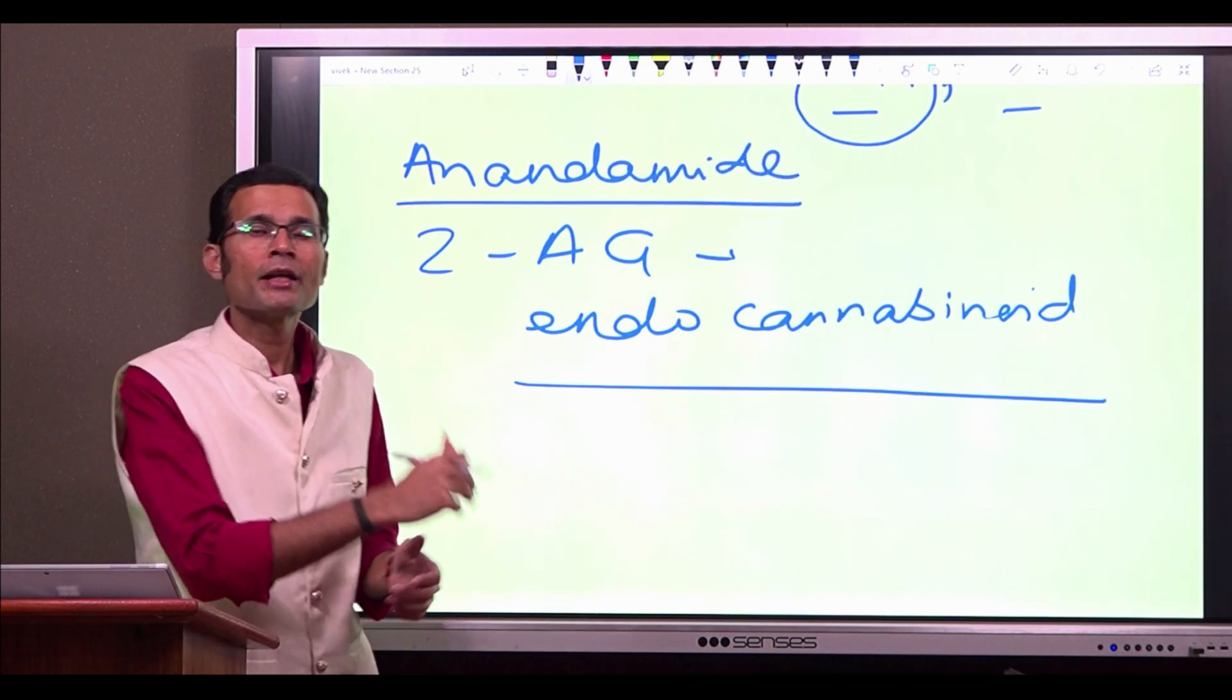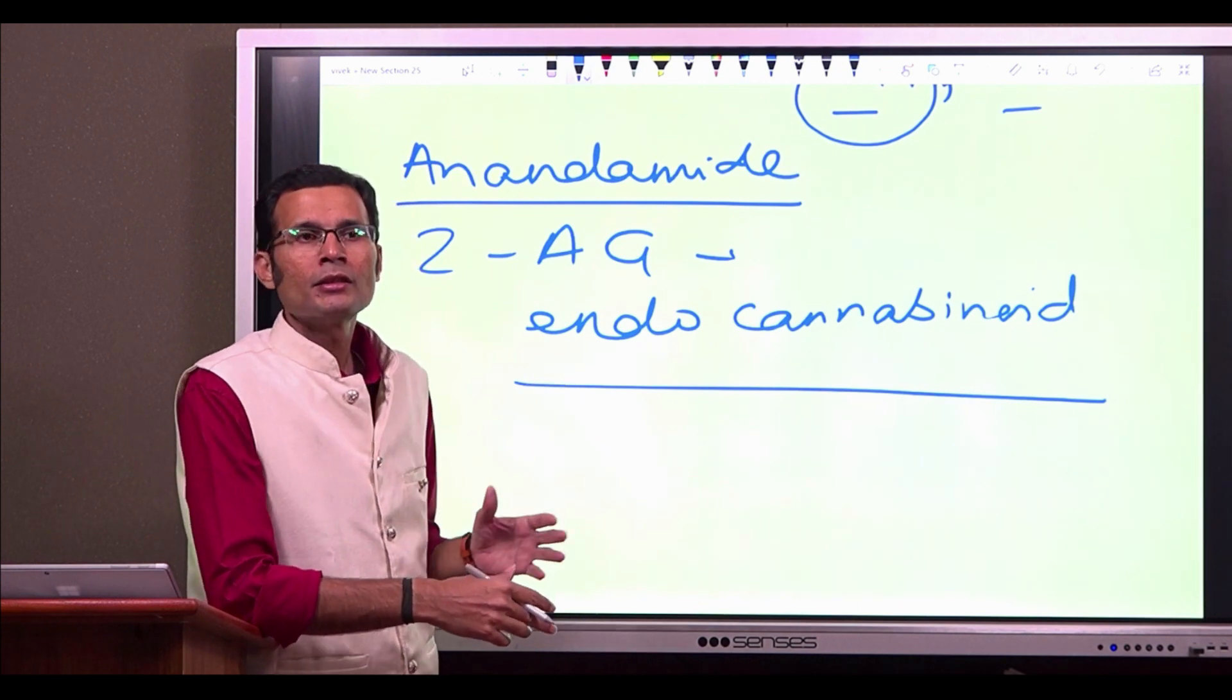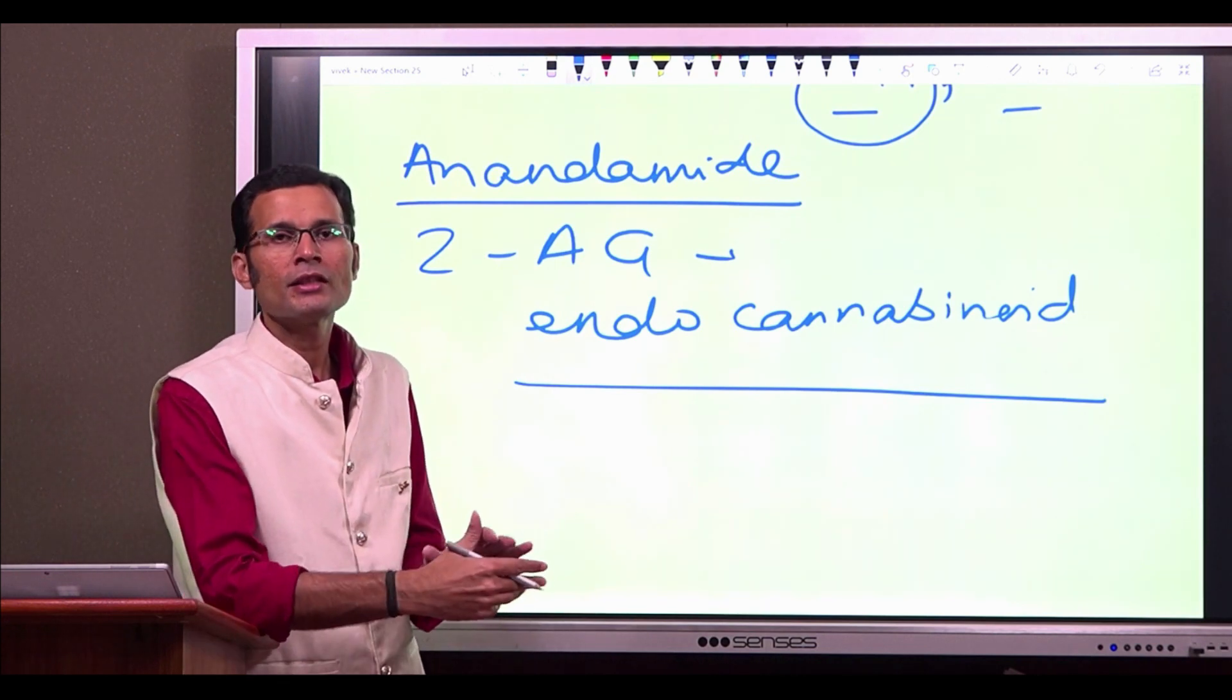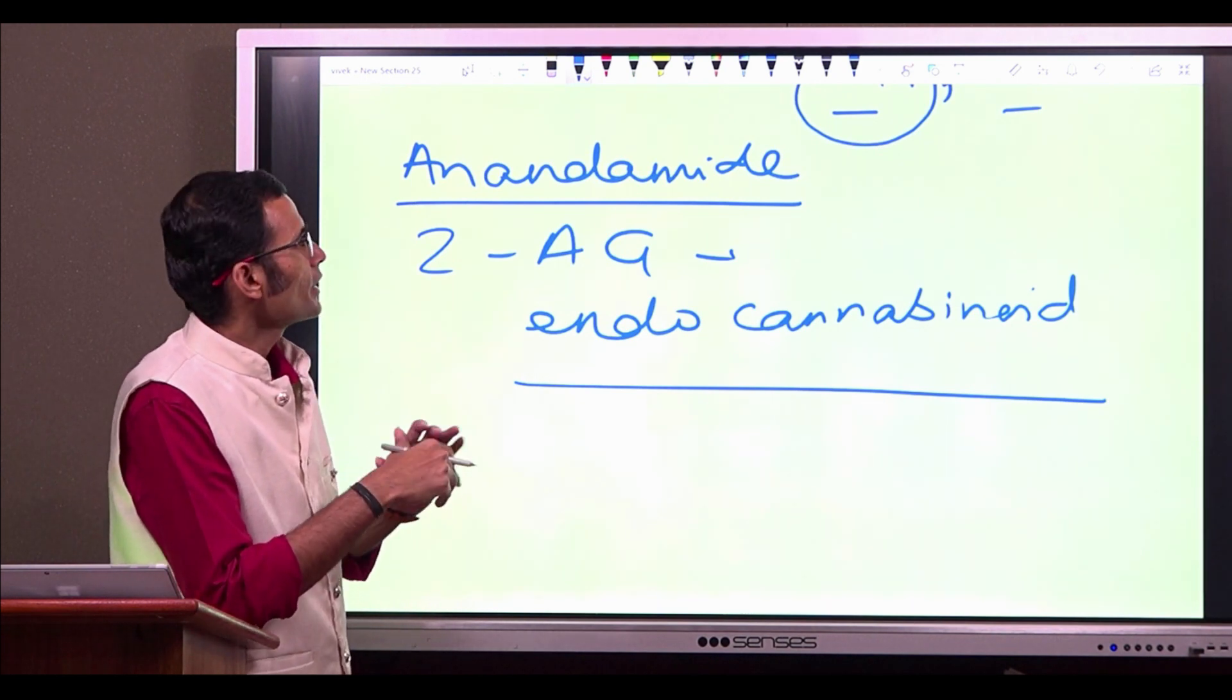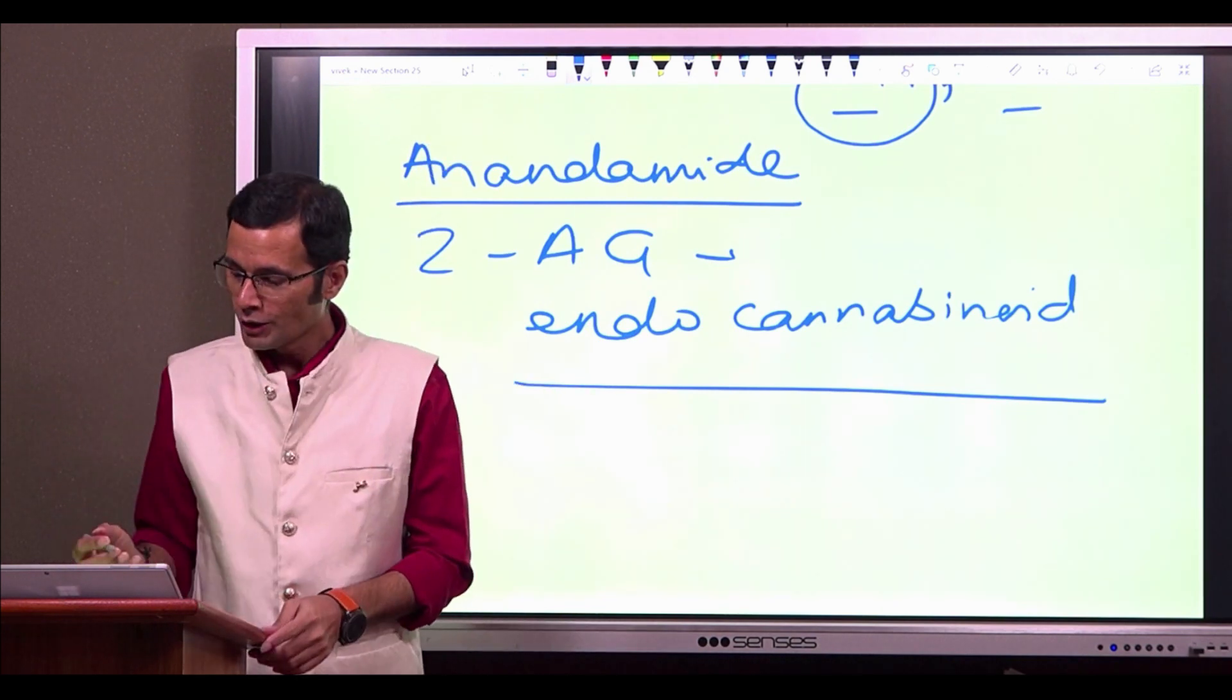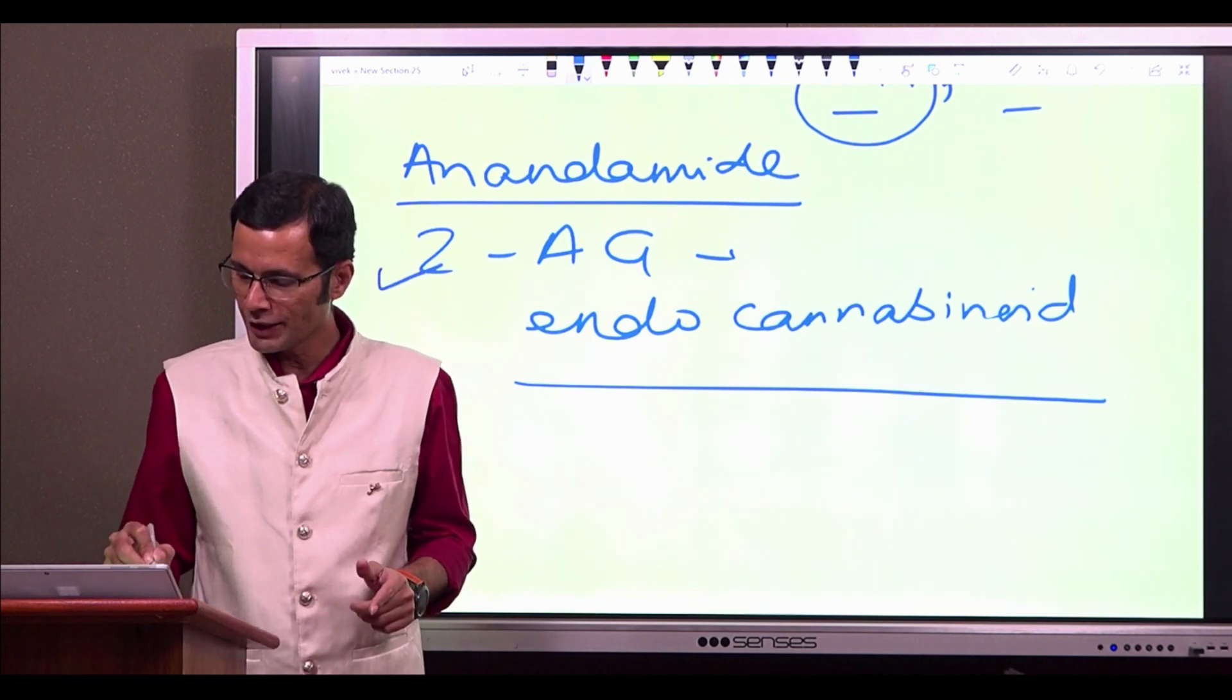You must be aware, the Indian viewers, that anand literally means bliss. And since this was discovered by an Indian scientist, so he gave the name anandamide to another endogenous cannabinoid. So as of now, we know there are 2 endogenous cannabinoids, 2-AG and anandamide.